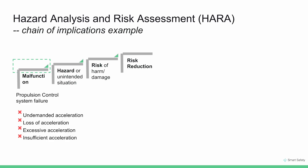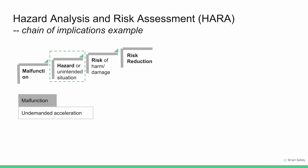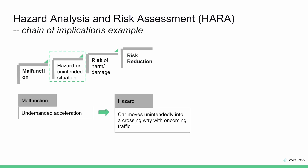Let's walk through an example. Consider a propulsion control system which implements the torque command function. The malfunctioning behavior of this system could lead to undemanded acceleration, loss of acceleration, excessive acceleration, or insufficient acceleration. Taking undemanded acceleration as the malfunction, the next thing we define is the hazard at the vehicle level — for example, the vehicle moving unintendedly into a crossing way with oncoming traffic, assuming the vehicle is parked at a red light when the malfunction occurs.